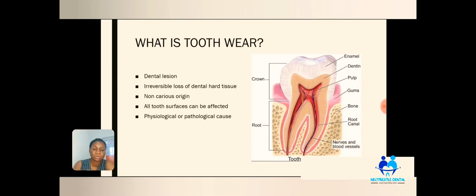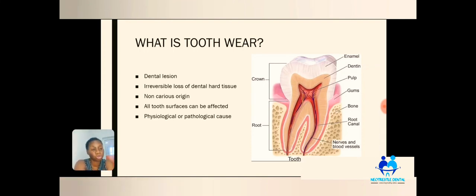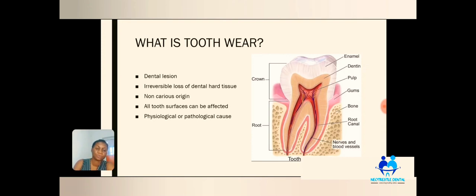The dental hard tissue includes the enamel and the dentine — this is the hard part of a tooth, as you can see in the diagram. The enamel and dentine are hard tooth structures, unlike the structure inside the tooth which is soft — the pulp, which contains nerves, blood vessels, and so on. So we are talking about the hard tissue, and tooth wear lesions are an irreversible loss of dental hard tissue. This can occur on any surface of the tooth.